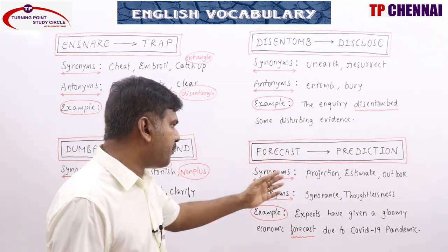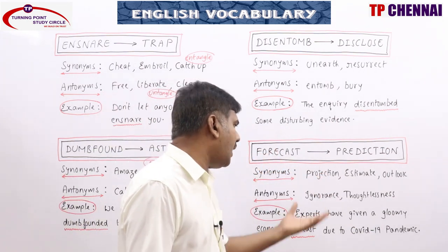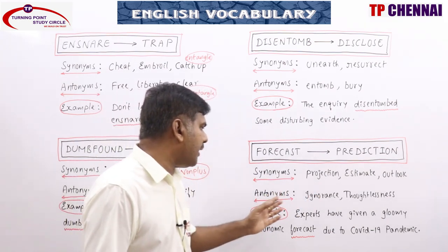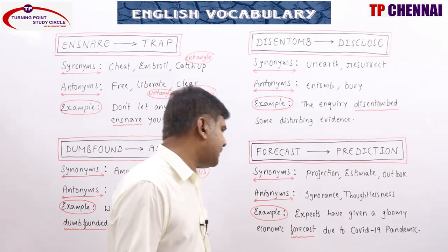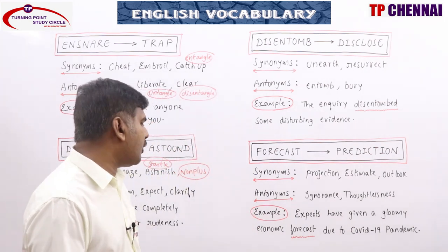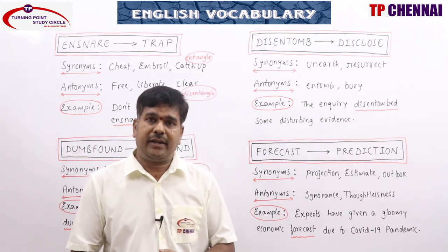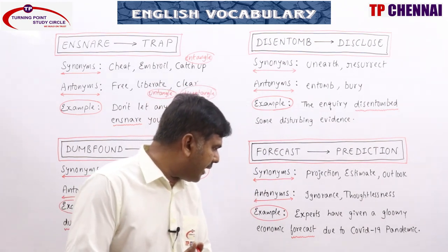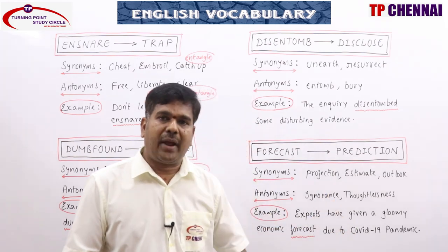Synonyms of forecast: prediction, projection, estimate, outlook, foreknowledge. Antonyms: ignorance, thoughtlessness, hindsight. Example: Experts have given a gloomy economic forecast due to the COVID-19 pandemic.